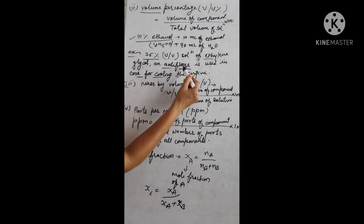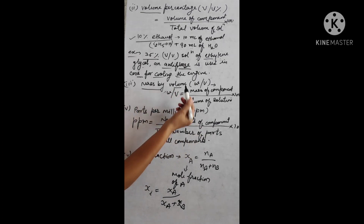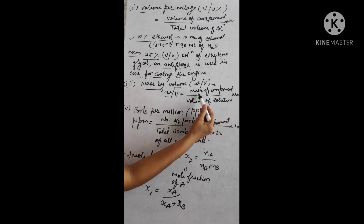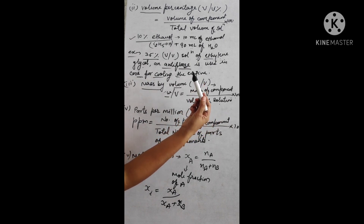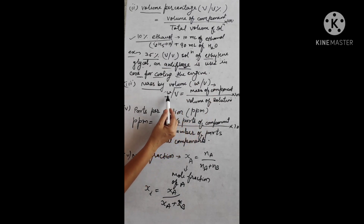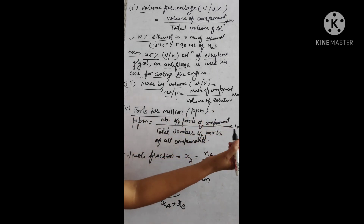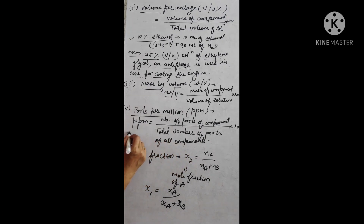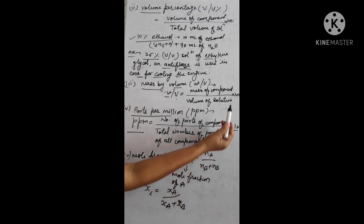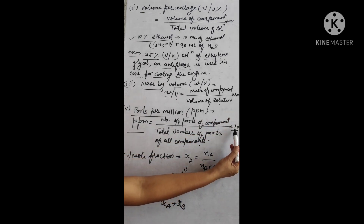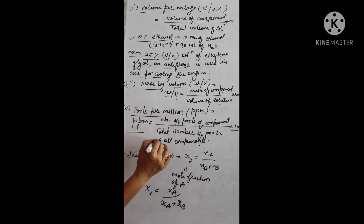The third method is mass by volume percentage: mass of component (in grams or kilograms) upon volume of solution, multiplied by 100. If the solute is present in a very trace amount, we use ppm — parts per million — which is the number of parts of the component upon total number of parts of all components, multiplied by 10 raised to the power 6. So concentration is expressed in ppm.